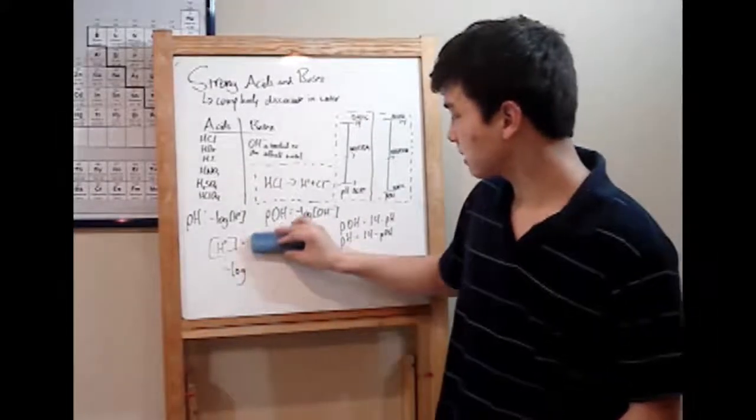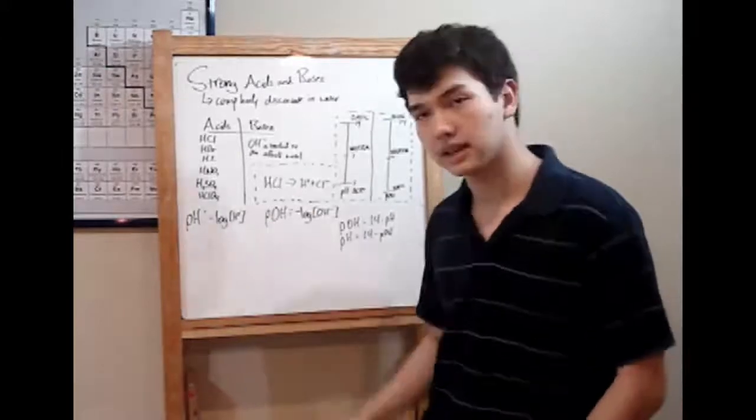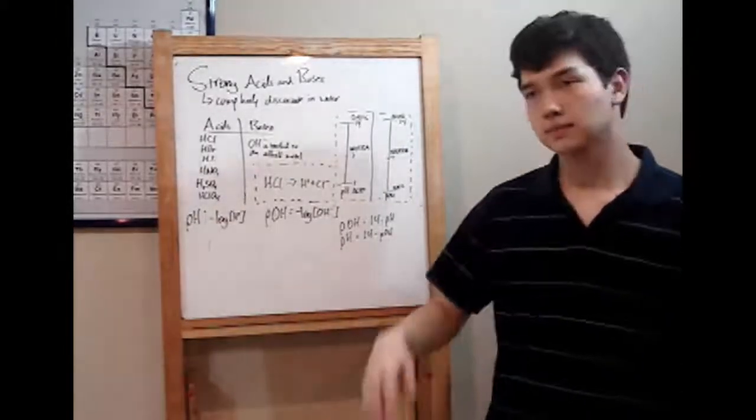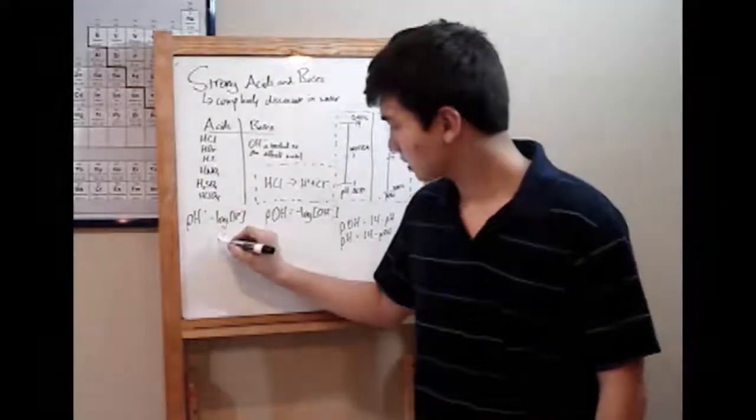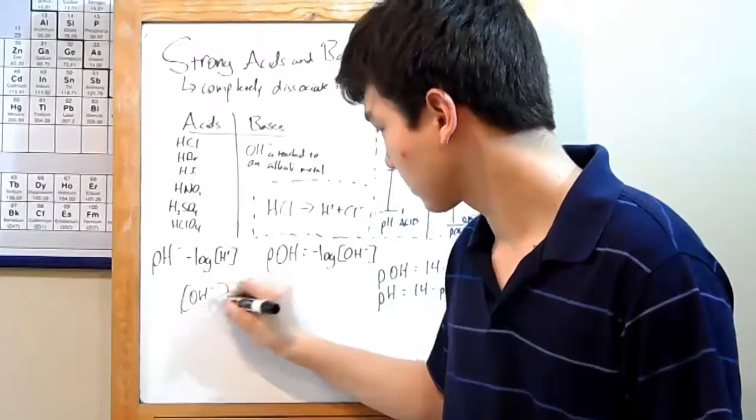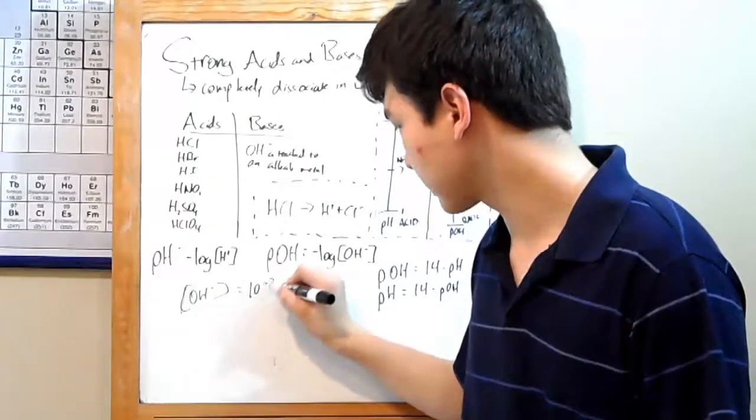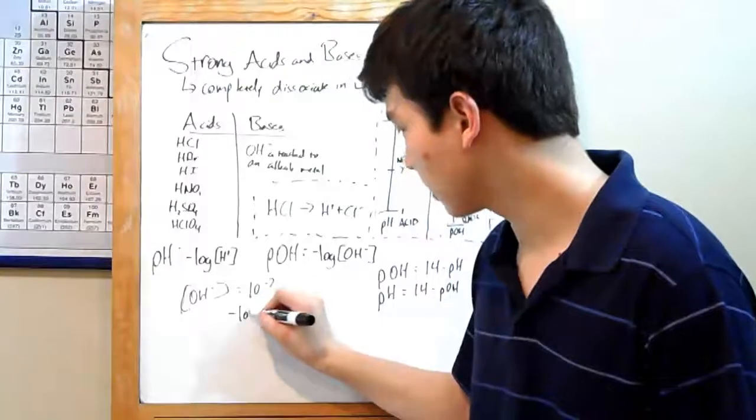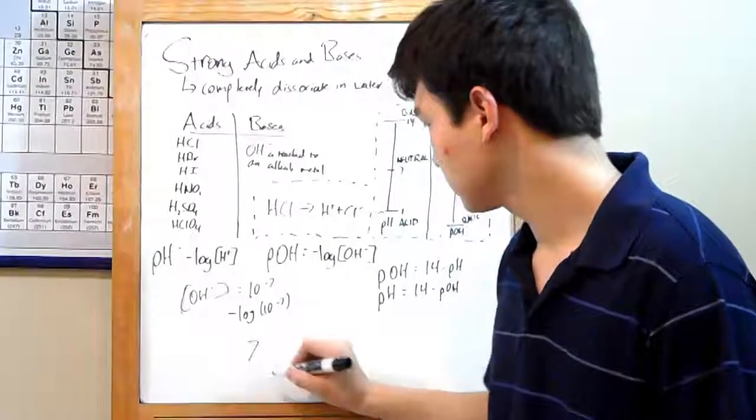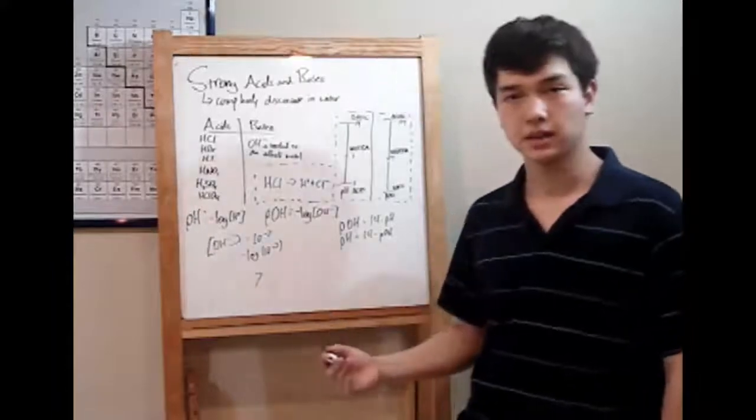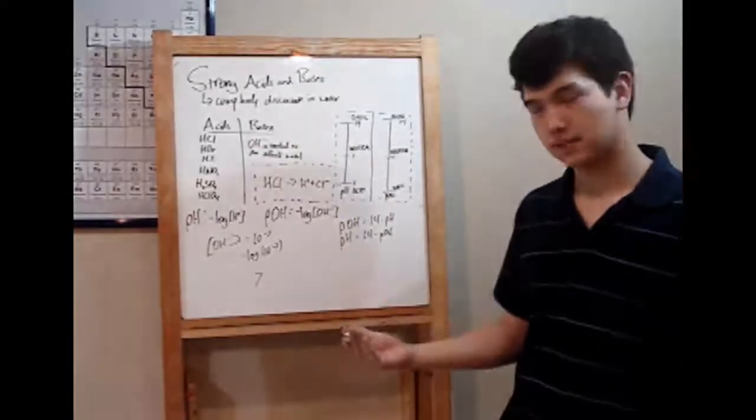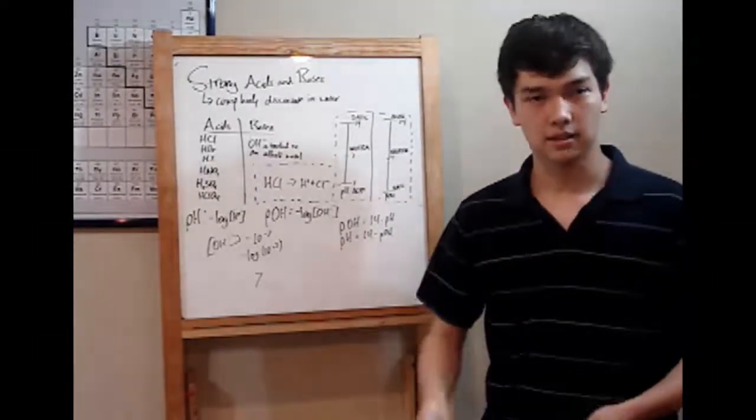pOH is pretty much the same thing, only with OH- ions. The negative log of OH- ions. So, let's say you had a concentration set at 10 to the -7. Punch it into your calculator. Negative log, 10 to the -7. And you should come up with 7. And there's your pOH. Want to define pH? 14 minus 7. That's just 7. And that's all there is to it.